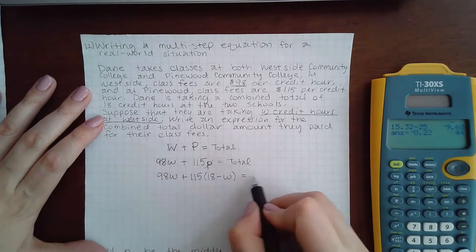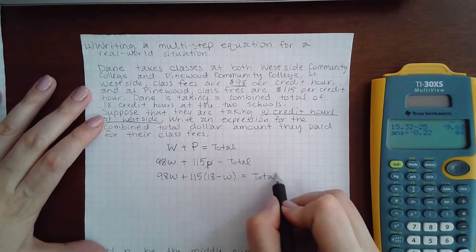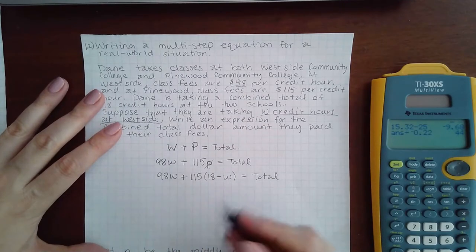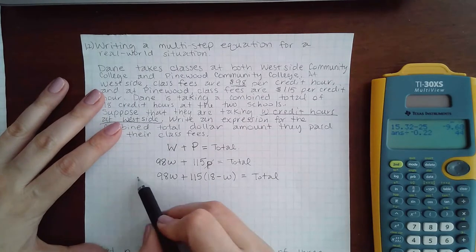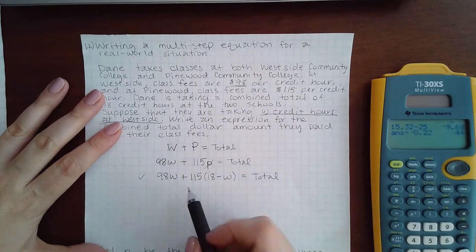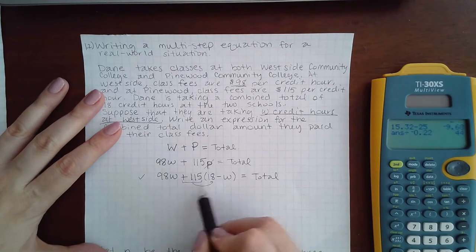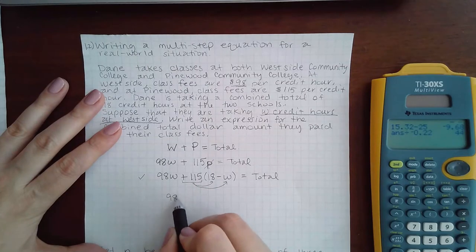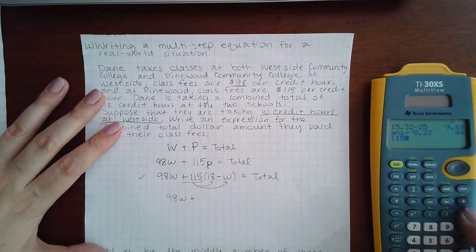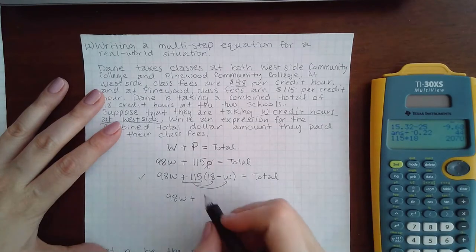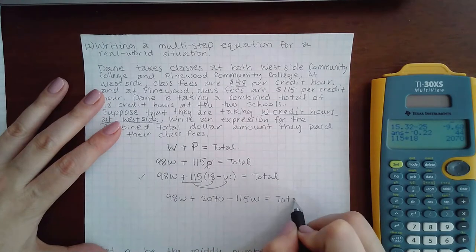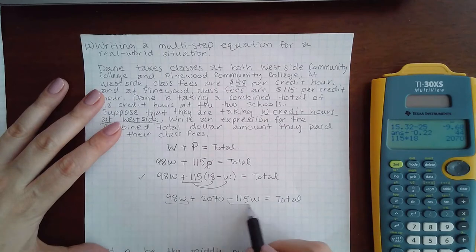Now you have a linear equation where everything is in terms of just one variable. They will accept this as your answer. However, they also might accept the answer if you simplify this expression. So 98w plus 2070 minus 115w.